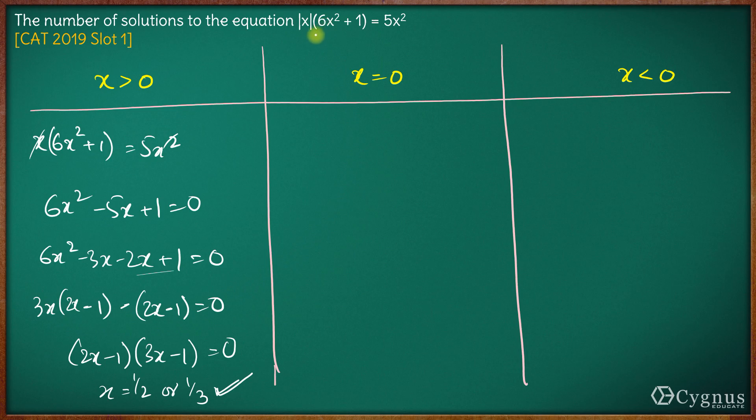Next, if x is equal to 0, the left hand side is 0 and the right hand side is also 0. So 0 equals 0 is satisfied. Hence x equals 0, this value will also be accepted.